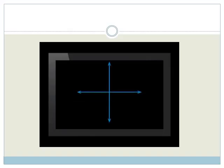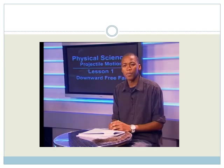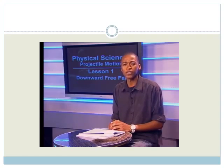Acceleration is a vector quantity, so it has direction. In vertical motion, we work along the y-axis of a Cartesian plane. We often take up as positive and down as negative. If we take down as negative, then 9.8 meters per second squared downward is the same as minus 9.8 meters per second squared. Be careful though — when we say the ball accelerates downward, we don't necessarily mean it moves downward.